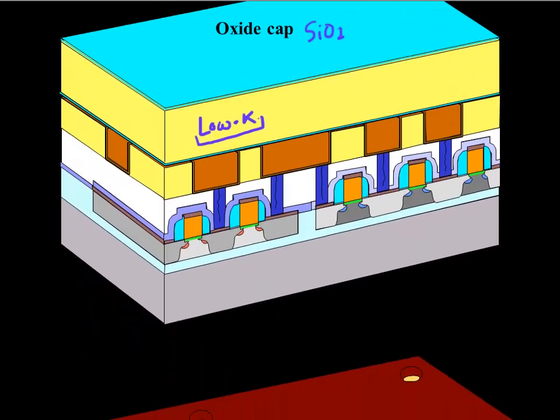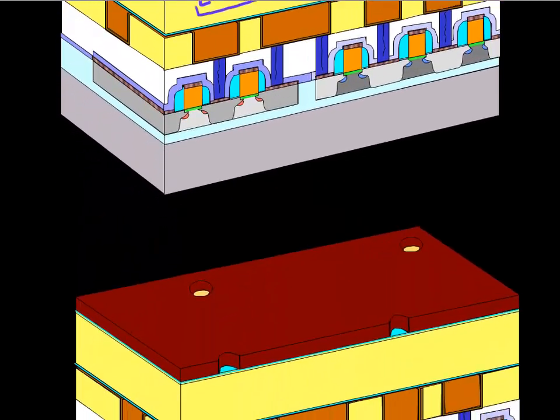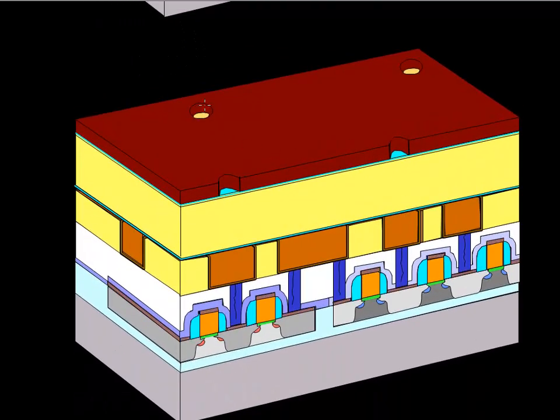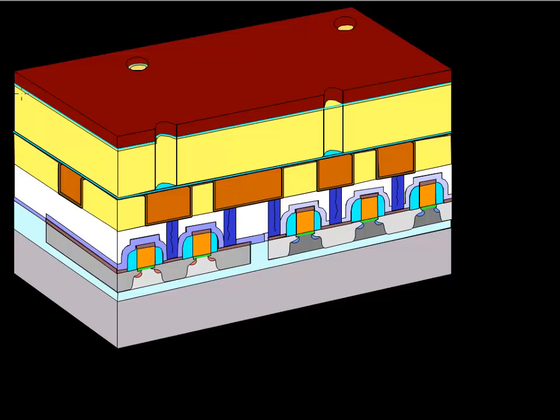And then the next thing we do is cover it with photoresist. And then we pattern this photoresist with the places where we want this via. So we have these vias patterned into our photoresist. The next thing we do is etch these into our oxide. So we, once we have etched this vias into the pattern of the vias into our low K layer. It looks something like this. And then we strip off this photoresist. So we remove this photoresist.